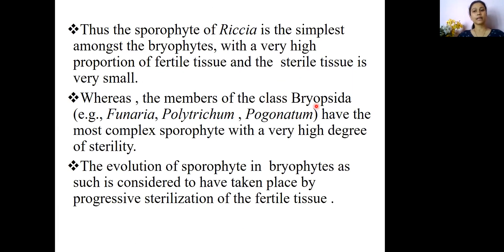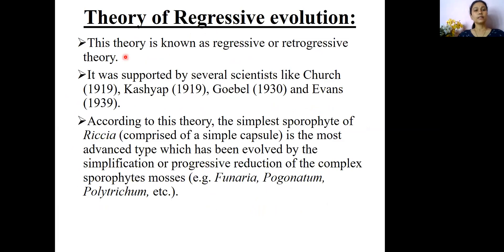Compared to the other members of class Bryopsida, which are considered highly evolved with complex sporophytes but with a high degree of sterility, we can conclude that the evolution of sporophytes in bryophytes has taken place due to progressive sterilization of fertile tissues from Riccia to Funaria.